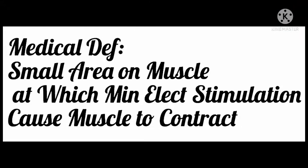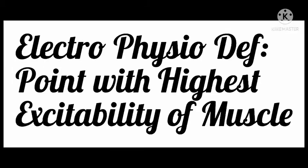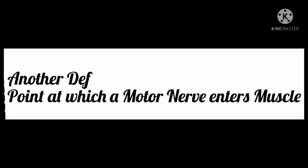The medical definition of ES (electrical stimulation) refers to small areas on muscle at which minimal electrical stimulation causes the muscle to contract. The electrophysiological definition of ES is the point with highest excitability of muscle. Another definition of ES is the point at which a motor nerve enters a muscle.